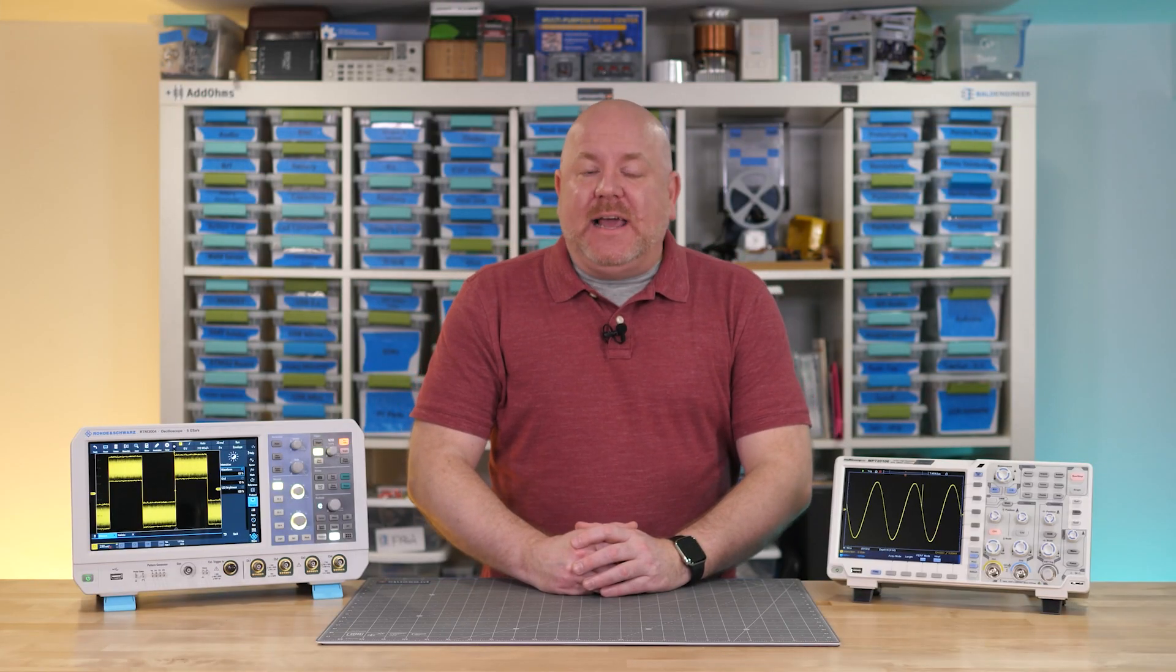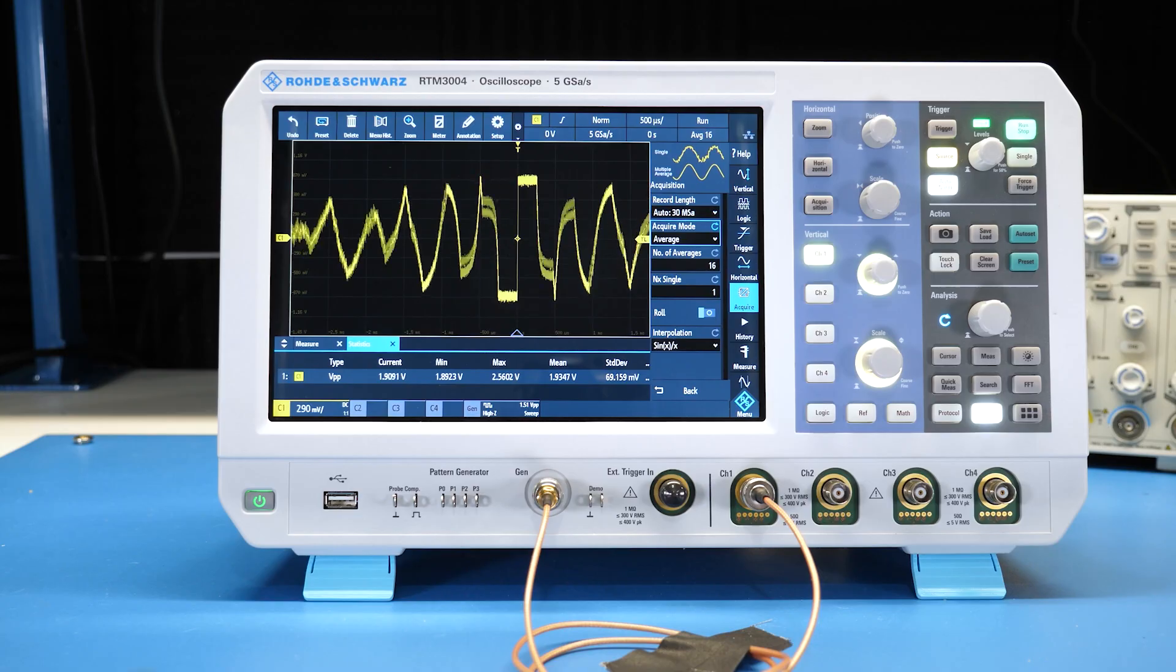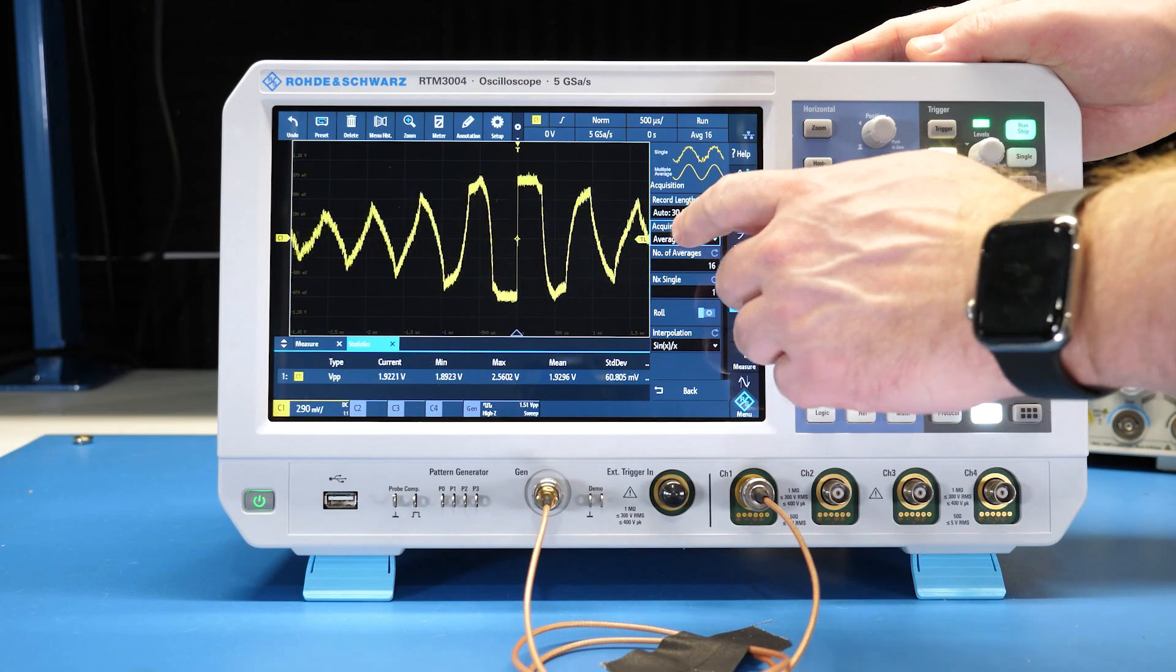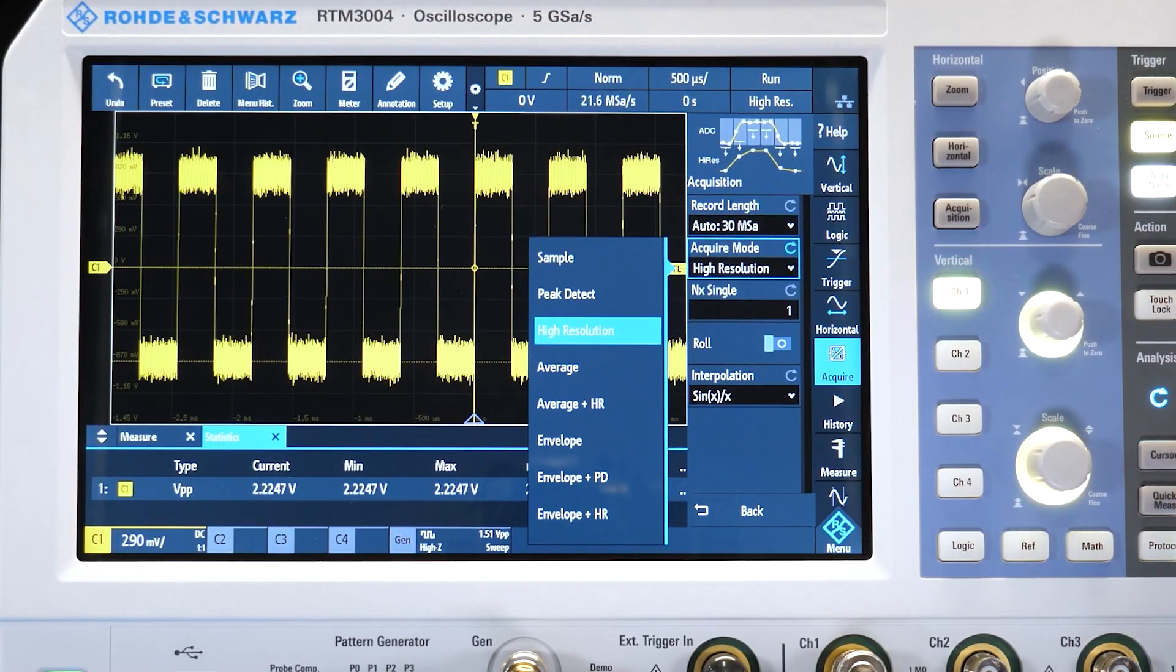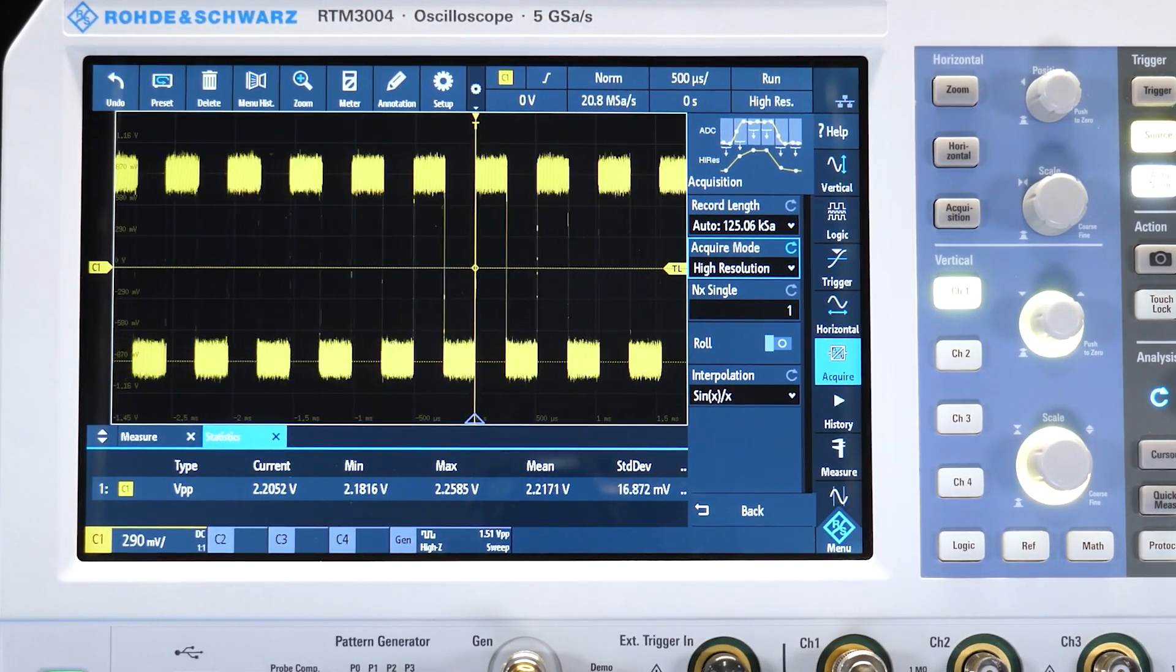High resolution mode is like waveform averaging, but it can work on a single acquisition. Similar signal from before, but this time we're doing a different modulation. Changing from average to high resolution shows a sweeping frequency.